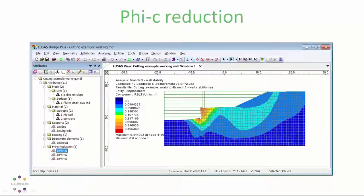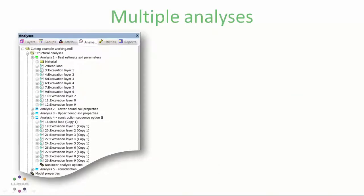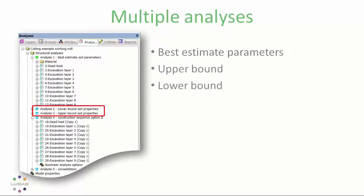So, for example, in this analysis, the use of three Phi C reduction attributes allows us to consider the safety factor for the slope at two different stages of construction, plus the wall independently. So this ensures we can obtain a factor for both the wall and the slope at the end of the analysis, not just one result relating to whichever of the two happens to have the lower safety factor. And then since version 15, our multiple analysis tree on the left here has made it easy to consider the construction sequence with best estimate soil parameters. The upper bound and lower bound parameters or perhaps a completely different construction sequence. And of course, things like consolidation and so on.